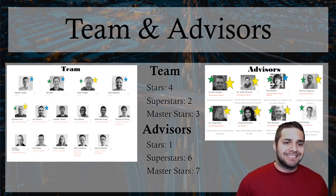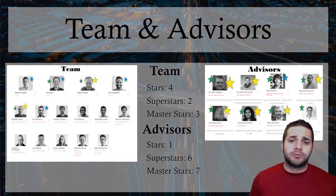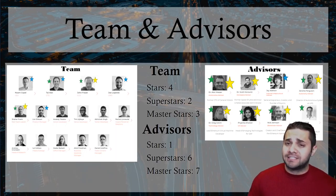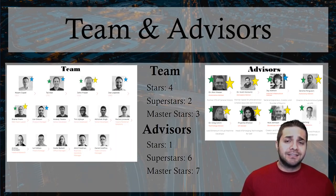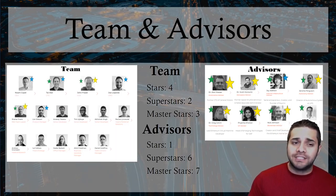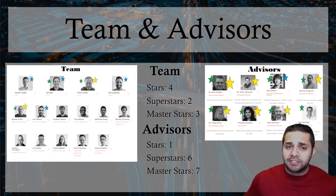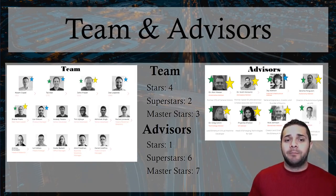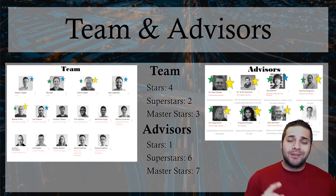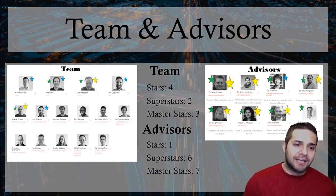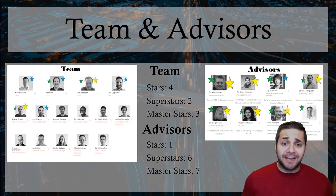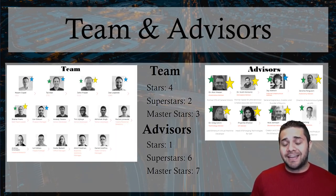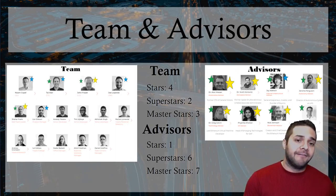Our third advisor MVP is Nick Johnson — he's a definite superstar. He has worked as a software engineer at Ethereum for two years, was at Google before that for about seven years, and is close to hitting that 20-year mark in the IT space. I also wanted to note that they have a former space shuttle astronaut among their advisors, which you don't see every day. This is one of the best advisory teams I've seen on any project, which is why they got a five out of five.